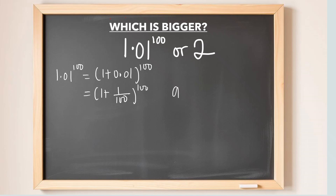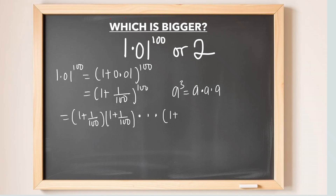If you have a to the power of 3, this is the same thing as saying a times a times a. Using the same approach here, 1 plus 1 over 100 to the power of 100 means we multiply 1 plus 1 over 100 by itself, up to 100 times.